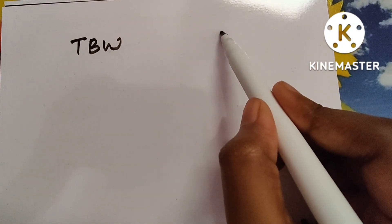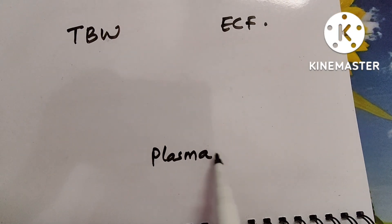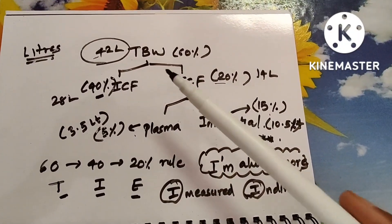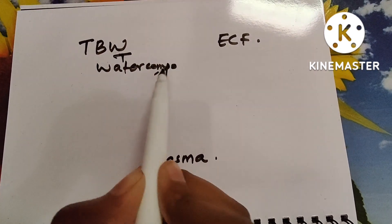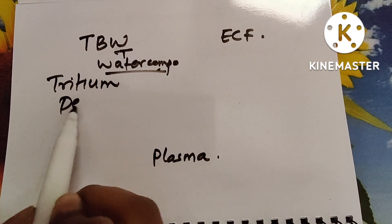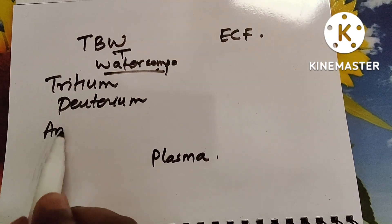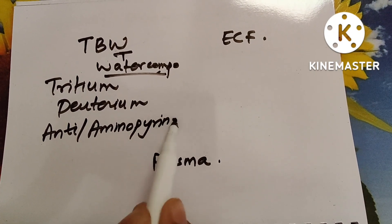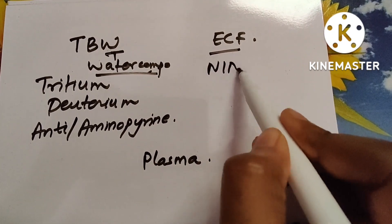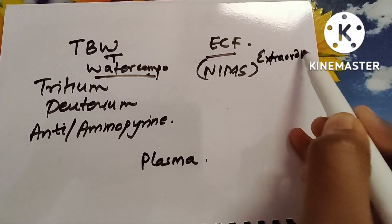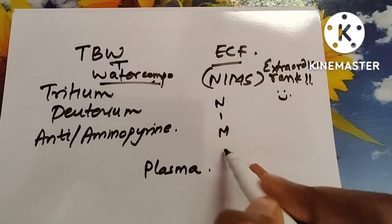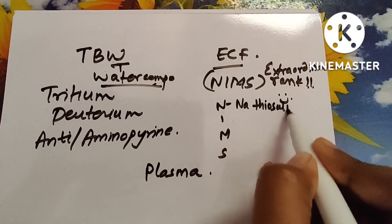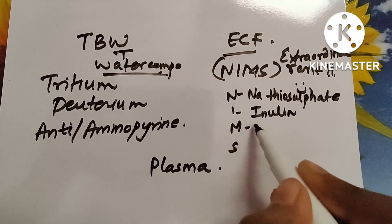The two I's (ICF and interstitial) are done; T, E, and P remain. For total body water, the term itself indicates water — so all water components like deuterium (²H₂O) and tritium (³H₂O) are used, along with antipyrin and aminopyrin. For extracellular fluid, remember NIMS: N = sodium thiosulfate, I = inulin, M = mannitol, S = sucrose.